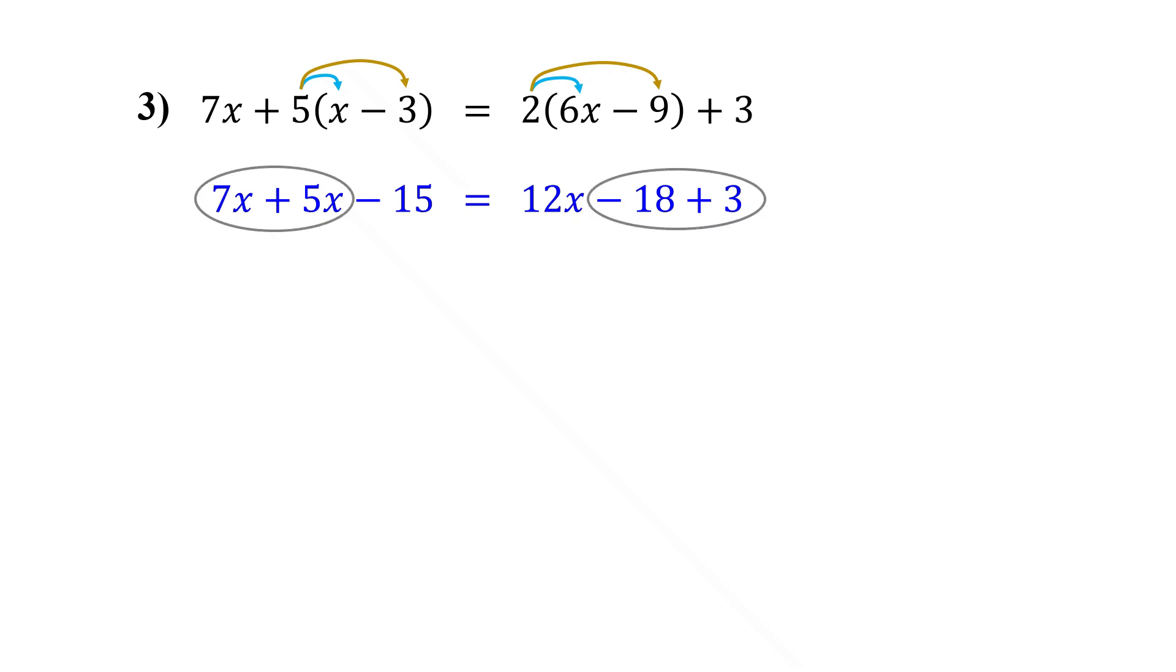Notice we have like terms on each side of the equation. So the next step is to combine them. On the left, 7x plus 5x is 12x. On the right, negative 18 plus 3 is negative 15.